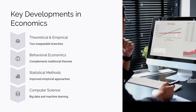To summarise, economics is divided into theoretical and empirical economics, and the two are inseparable. Recent trends include behavioural economics, which complements traditional theories, and improvements in statistical methods in empirical economics. The influence of computer science has also led to the use of big data and machine learning. Next time, we'll classify economic schools of thought. Don't forget to subscribe, like, and turn on notifications.